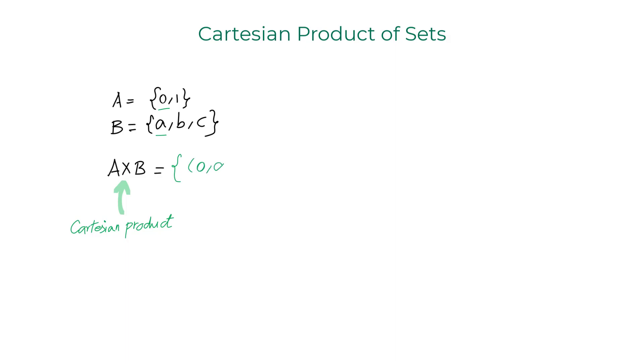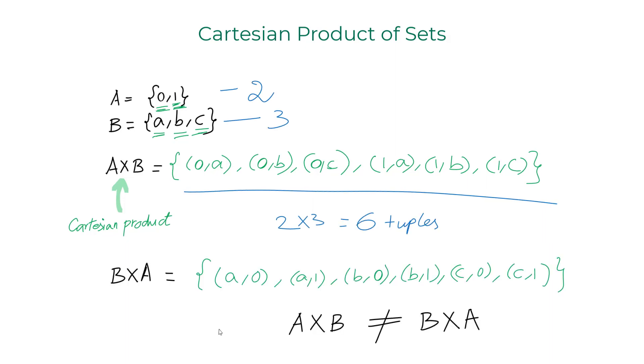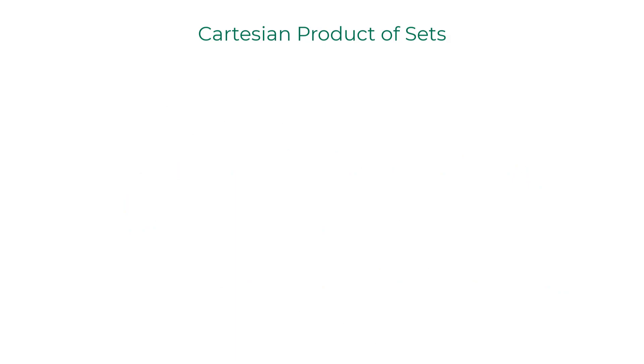The procedure is simple. You start with one of the elements in A and one of the elements in B, create a ordered pair tuple, and keep repeating the same over and over again. For two elements in A and three elements in B, you end up with six tuples. Now Cartesian product is not symmetric. A cross B is not equal to B cross A.